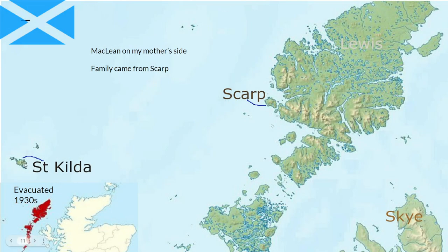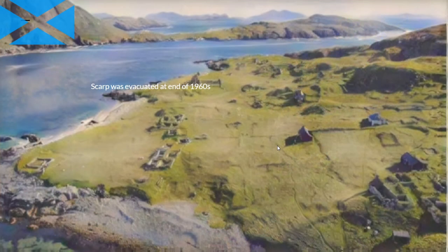Now, St Kilda is a very remote island — it was the most remote of the Scottish islands. So remote and isolated that in the 1930s it was evacuated, as it was regarded as impossible to maintain what was now seen as civilised life on such a remote outpost. I'm a Maclean on my mother's side, and our family — the grandparents' generation — came from the next island in, Scarp. Scarp itself met the same fate as St Kilda: it had a population of some hundreds at the start of the 20th century, and by the late 1960s it was down to my uncle's family and one other family, and the island was evacuated.